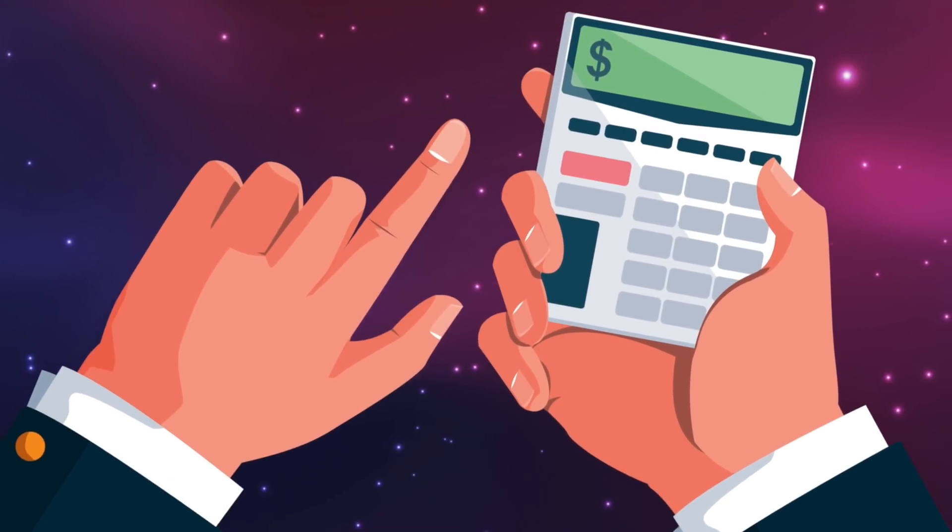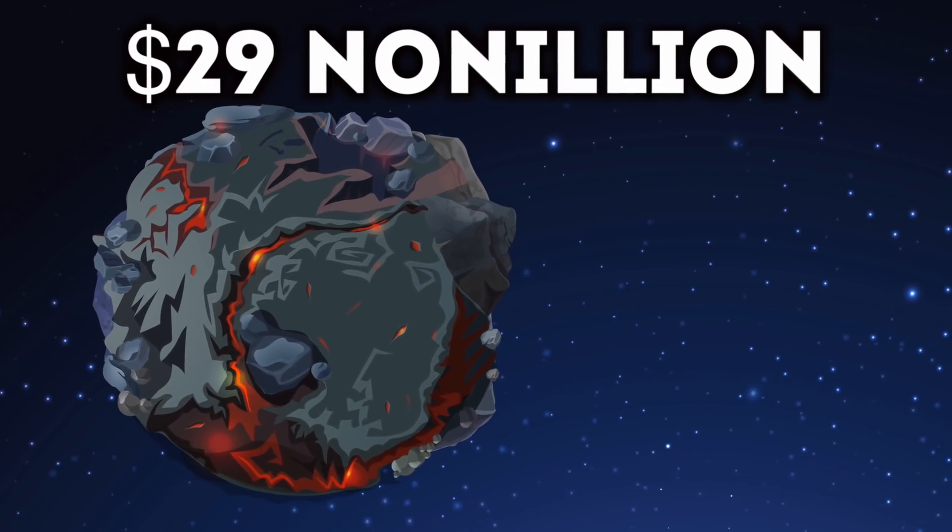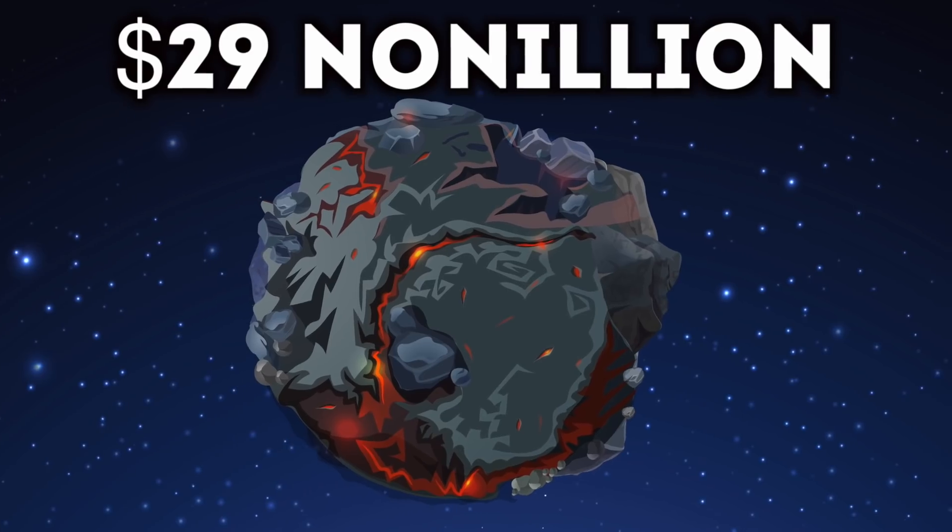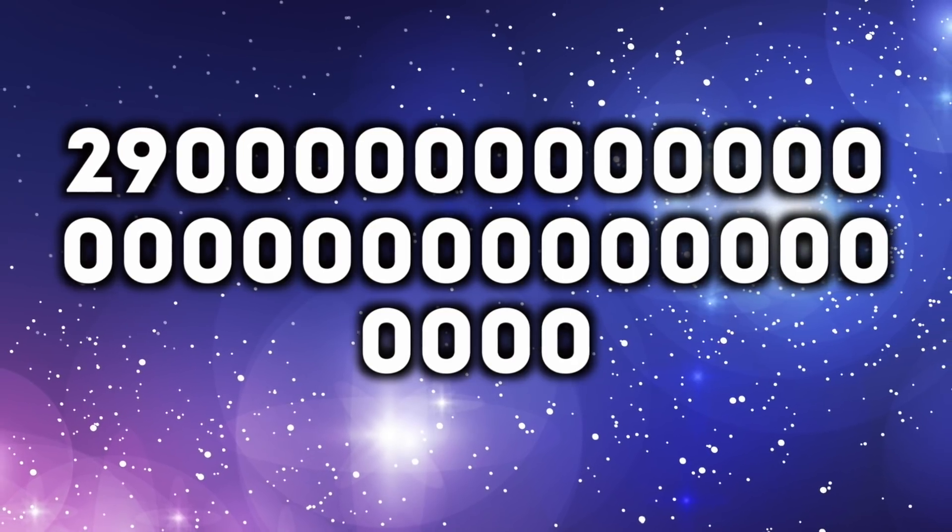The answer is 29 nonillion dollars. That probably doesn't mean much to you because you can't visualize such a big number. But here it is written down - as you can see, it's the number 29 with 30 zeros. The biggest number you've probably ever thought of is 1 trillion - that is a one with 12 zeros.